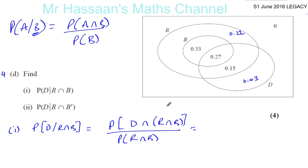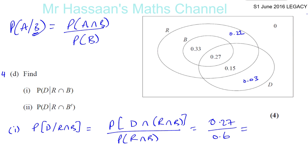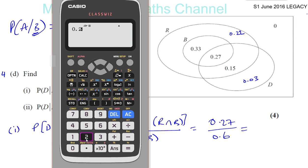What is the intersection between D and R and B? It's those people who have taken breakfast and also dinner, so it's 0.27. Over R intersection B — which is B altogether — that's our denominator, so it's 0.33 plus 0.27, which is 0.6. So that gives us 0.27 divided by 0.6, which gives us 0.45. So that's the answer to part 1.